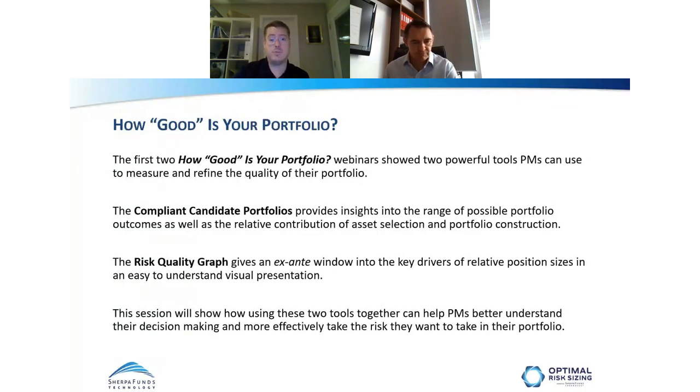We're going to talk about how we can look at our risk preference before we see the results of the portfolio — to determine how varying levels of risk impact the actual portfolio outcomes. Then we'll tie that back together to see how both tools can fit together so we can pinpoint how much risk we want to take and build well-constructed portfolios. We will be taking questions at the end.